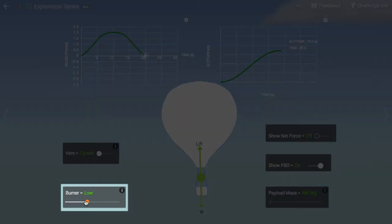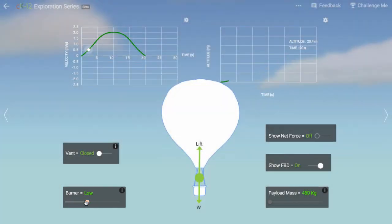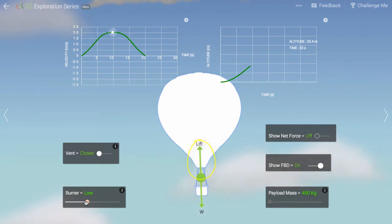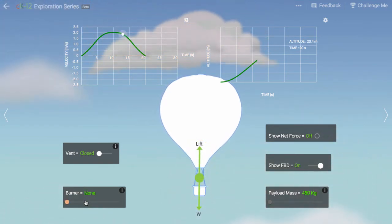When we heat the air in the balloon, its density decreases and the balloon weighs less. The lift force doesn't change much. After all, the balloon doesn't change size by very much, so it is still displacing the same volume of outside air.